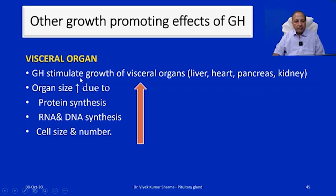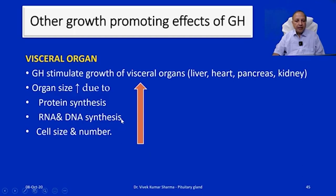Not only at external structures, but the simultaneous growth of visceral organs is also promoted. As the stature of the person increases, growth hormone stimulates the growth of visceral organs such as the liver, heart, pancreas, and kidneys. This increase in organ size is primarily due to increased protein synthesis, RNA and DNA synthesis, and increases in both cell size and cell number.